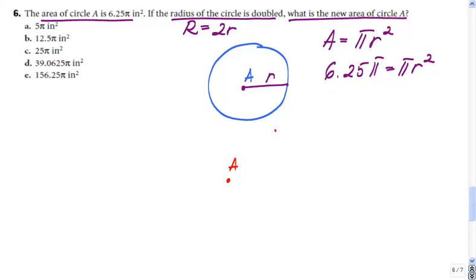So basically you have a new circle A, but its radius now, it's gonna be double. And that radius will be 2r, 2 times the initial radius.